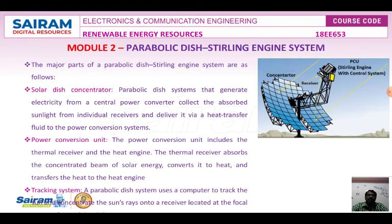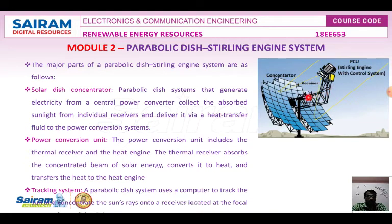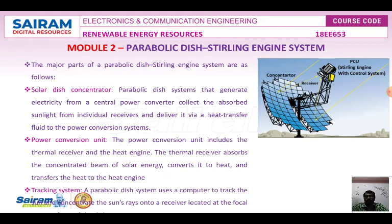The Stirling engine is especially used in the parabolic dish concentrating solar collector system. This is the Stirling engine setup showing the control system, PCU, the receiver, and the concentrator where the mirrors are kept. It is a tracking system — whenever sun rays fall onto the focal point, they are received by the receiver. The temperature variation in the chamber moves the piston, which rotates the shaft.